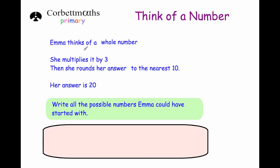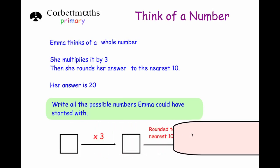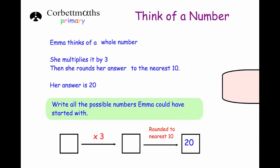Our last question is a little bit different. Emma thinks of a whole number, she multiplies by three, then rounds her answer to the nearest ten, and her answer is twenty — write down all the possible numbers Emma could have started with. There could be several answers. First, let's write down all numbers that could round to the nearest ten to give twenty. Those are: fifteen, sixteen, seventeen, eighteen, nineteen, twenty, twenty-one, twenty-two, twenty-three, and twenty-four — but not twenty-five, because that would round up to thirty.